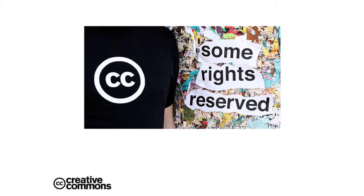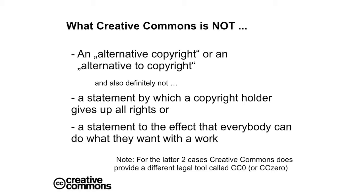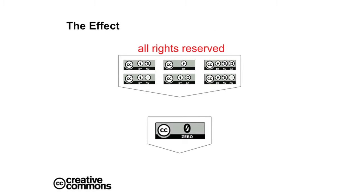What Creative Commons is not — and this is a slide very dear to me — it's not an alternative copyright, and it's definitely not a giving up of rights, nor a statement saying you can do whatever you want with it. Although for the latter two, CC has some tools in its toolbox, but these are not the CC licenses themselves. The effect is simple: you start from 'all rights reserved,' apply a CC license, and end up at 'some rights reserved.' And if you want to get rid of all your rights, you can use the CC Zero waiving declaration to reach 'no rights reserved' — the public domain.